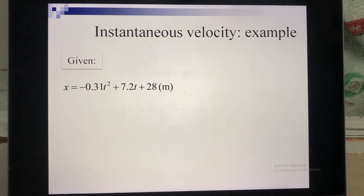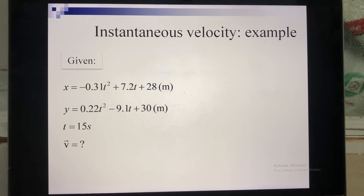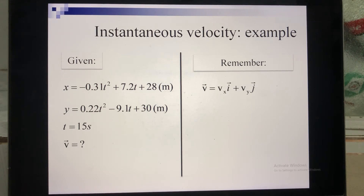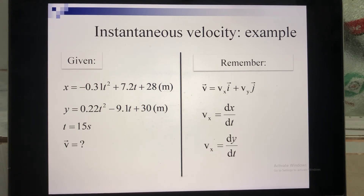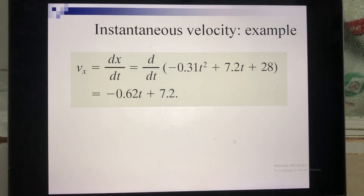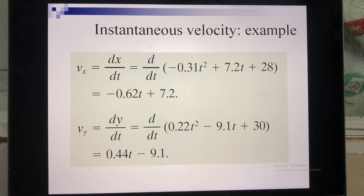Here is an example. Given x as an expression in time and y as an expression in time, at the moment T equals 15 seconds, calculate the instantaneous velocity. In the XYZ system, VX and VY are the components of V. VX is the derivative of x with respect to time, and VY is the derivative of y with respect to time. Substitute the expressions and take the derivatives to obtain VX and VY, which still depend on time. Then substitute T equals 15 seconds to get numerical values.